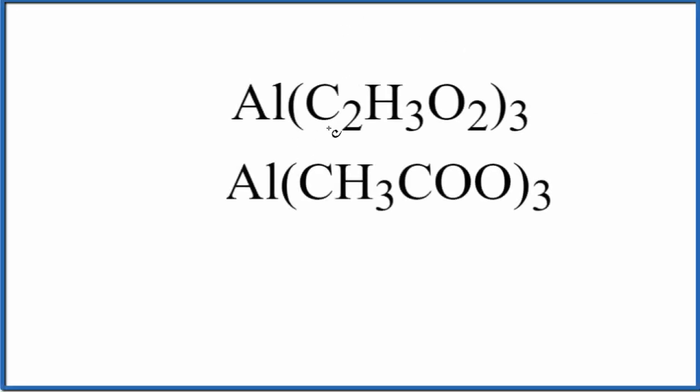So let's write the formula for Al(C2H3O2)3. You could also write this like this here. Instead of having your acetate ion written this way, you'll sometimes see it written this way. They're the same thing. So let's use the one on the top in this video.